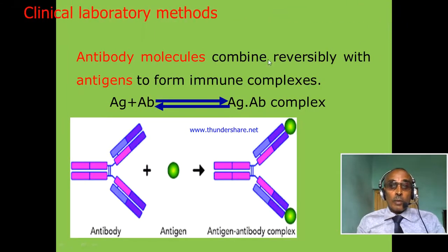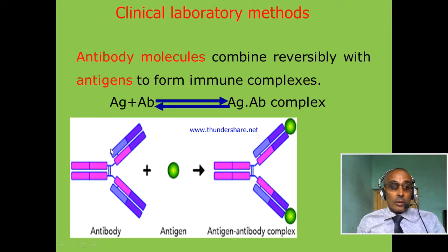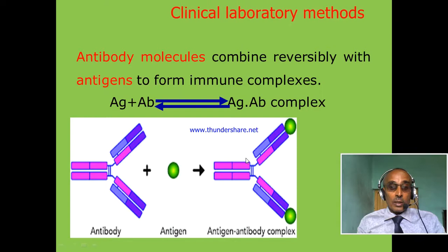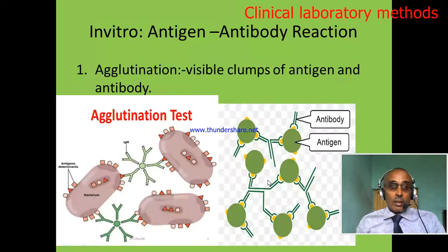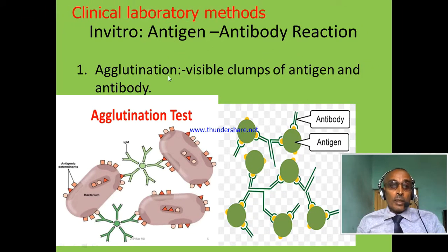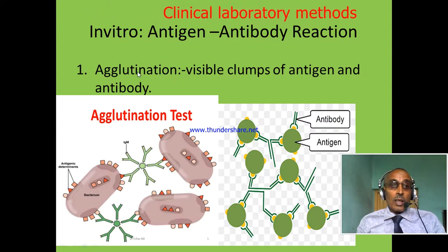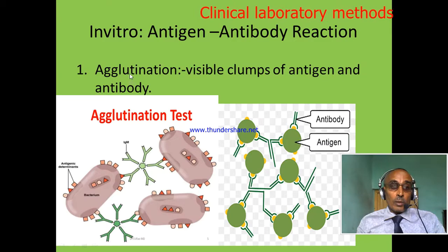Antibody molecules combine with antigens reversibly. When antibody and antigens are mixed together, they form an antigen-antibody complex. In vitro antigen-antibody reactions include different types of techniques, but the most common are agglutination and immunochromatographic testing.